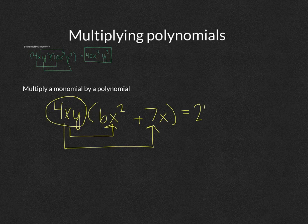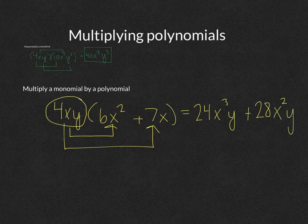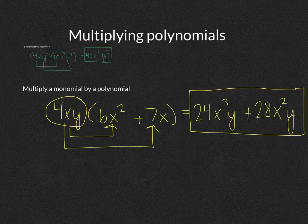This is the same process as multiplying a monomial by a monomial, but you do it twice. First, 4xy times 6x squared gives 24x cubed y — there's no extra y to multiply so it stays y. Then 4 times 7 is 28, x times x is x squared, and the y remains. So the result is 24x cubed y plus 28x squared y.